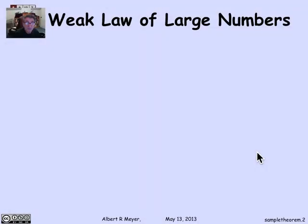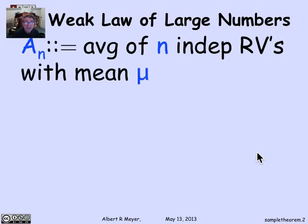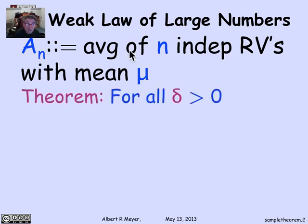So let's remember that the law of large numbers says that if you have n independent identically distributed random variables with mean mu, and we let A_n be their average, then for every positive number delta...